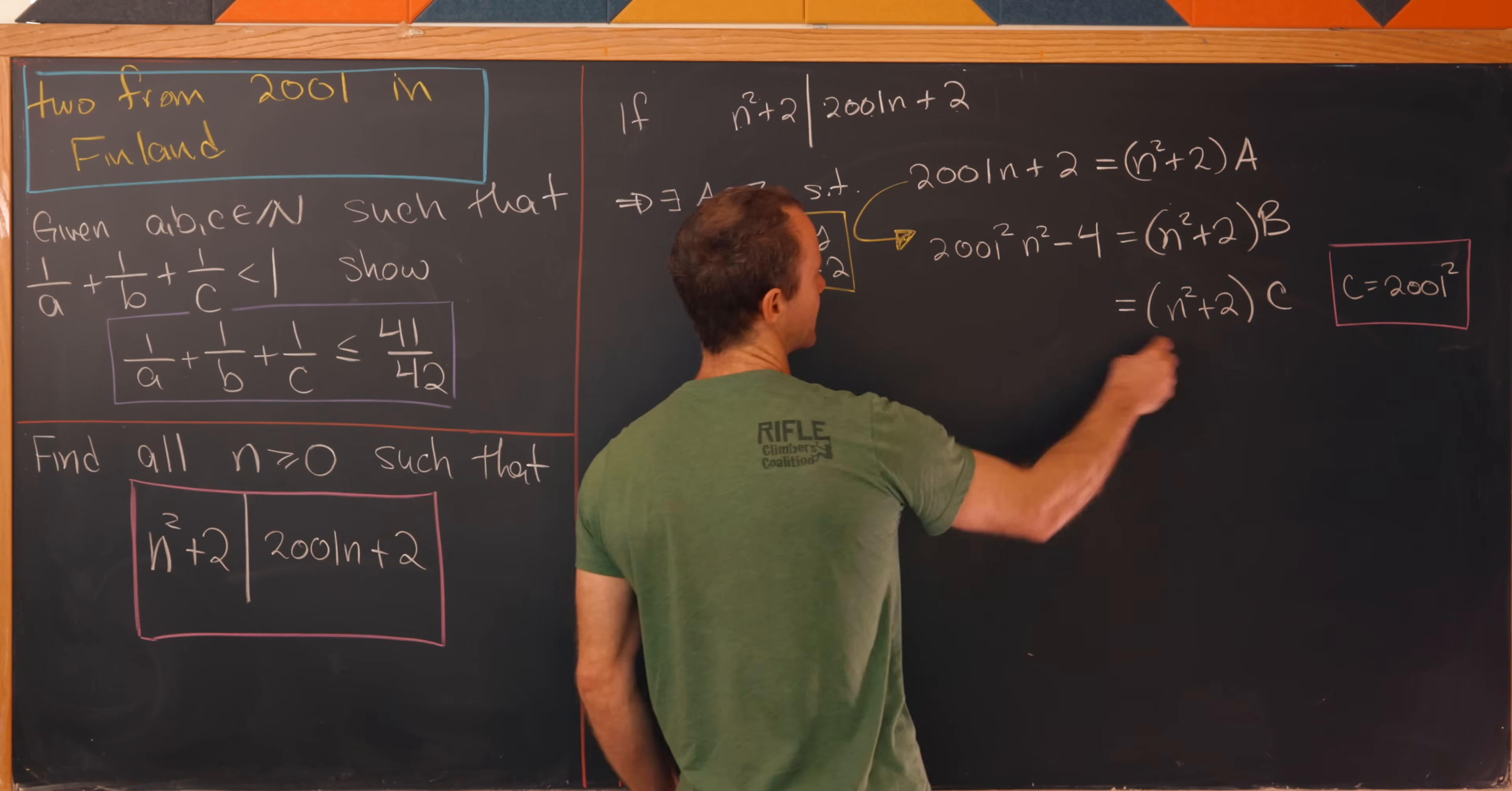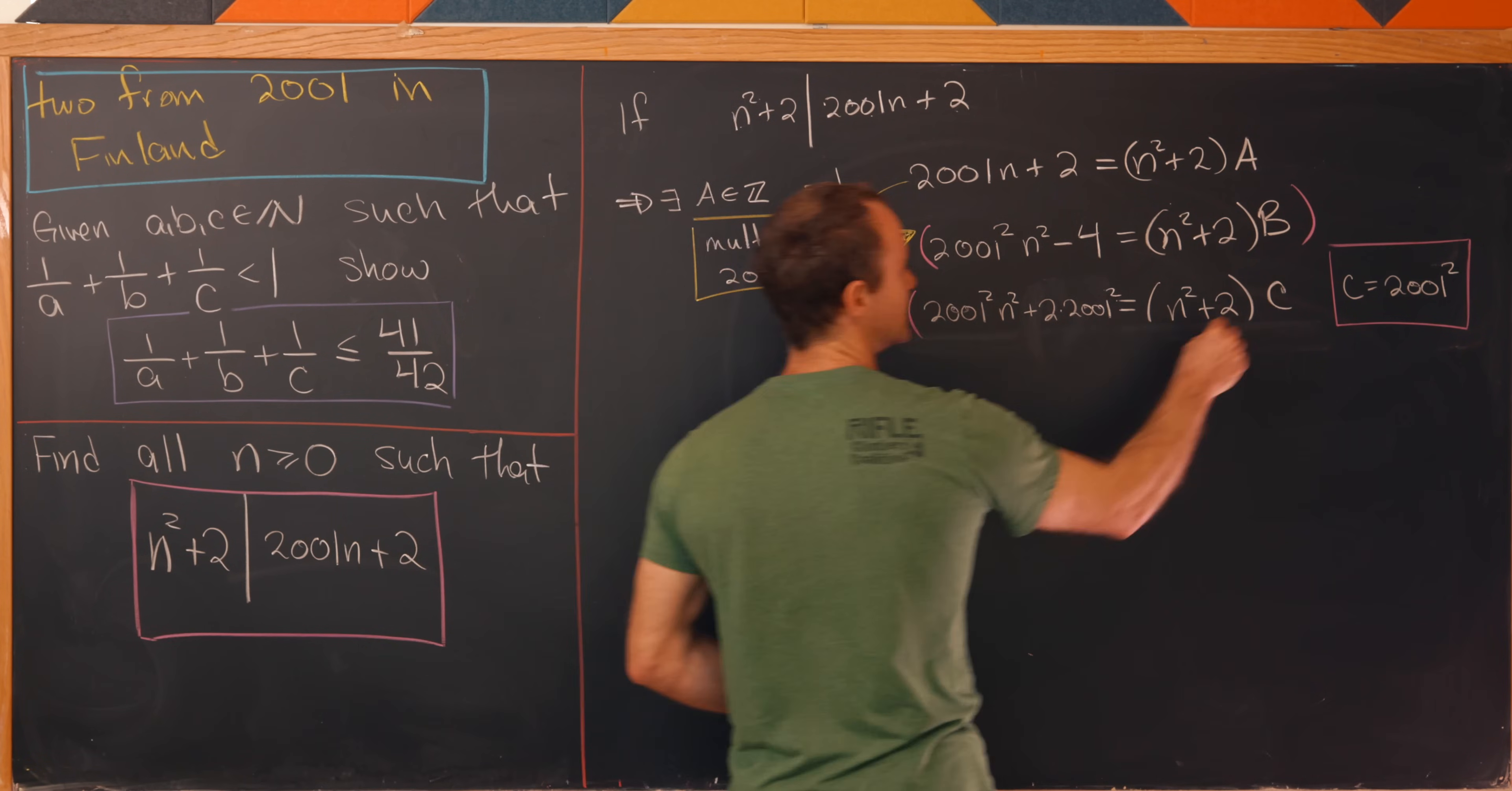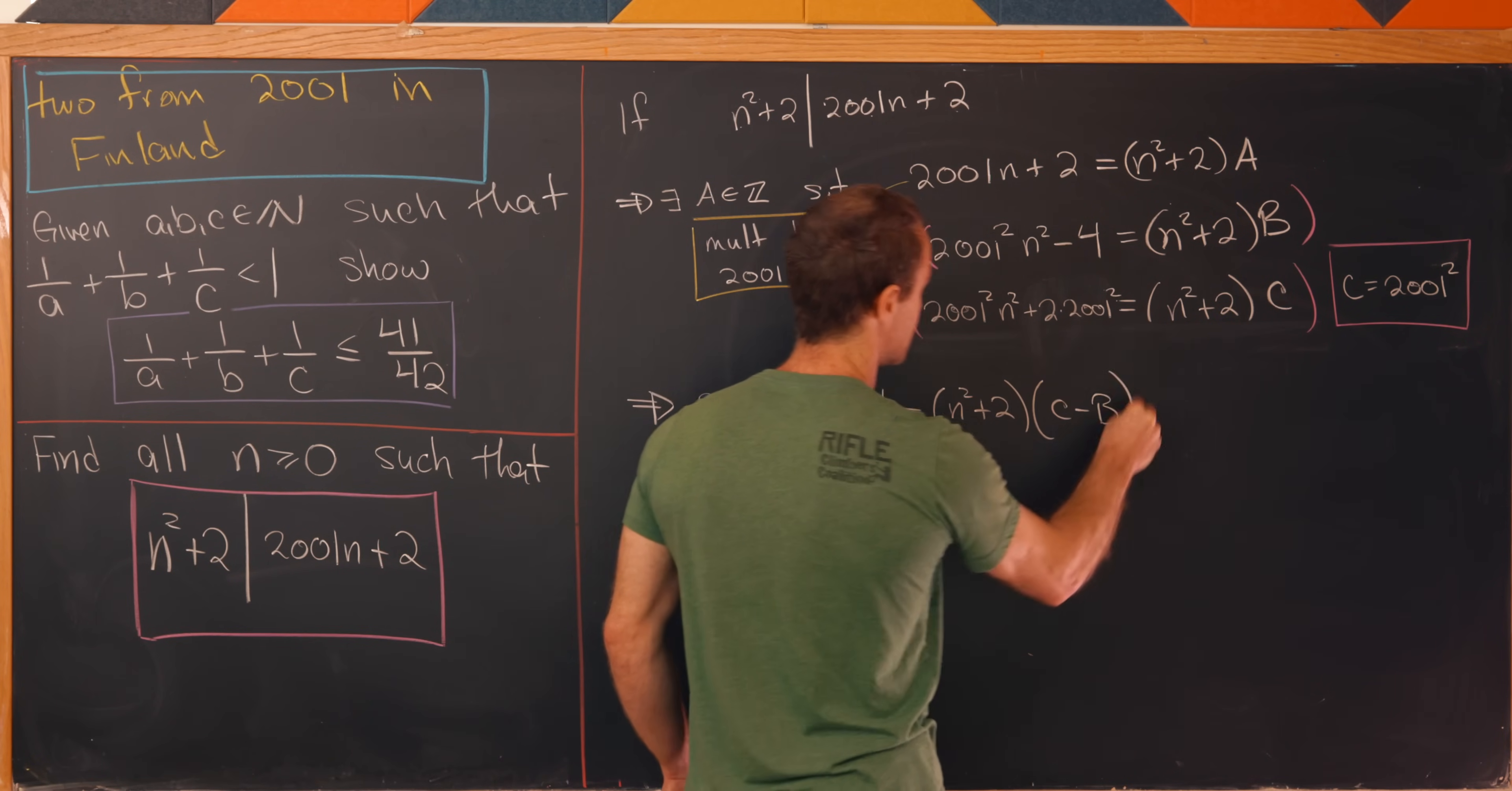So what does that leave me with? So I have 2001² n² + 2 times 2001². But now I'll combine these two equations to get rid of the n² over here on the left-hand side. So in this case, I can take this first equation, multiply it by negative 1, and then add it to this second equation. So what is that going to leave me with in the end? Let's notice that the 2001² n² terms will cancel, and then I'll be left with 2 times 2001² + 4 on the left-hand side. And then on the right-hand side will be n² + 2 times c - b.